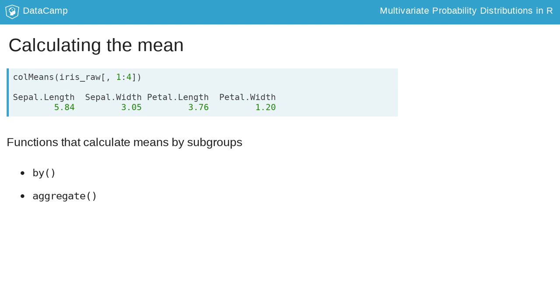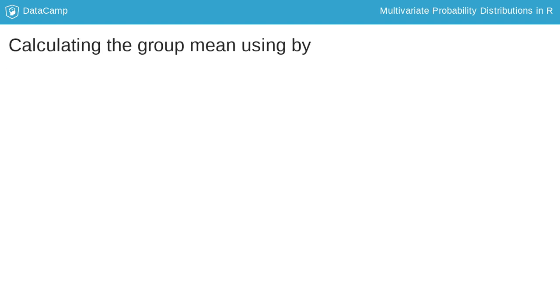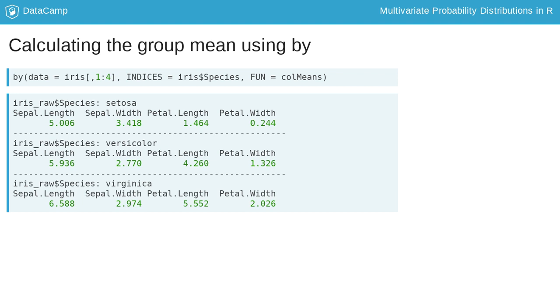There are two functions, by and aggregate, which subset the data and calculate the mean with the subset. The first argument of the by command is the variables whose mean we want to calculate. The second argument, indices, is the variable we want to group by. And the third argument is the function that we want to use to calculate the means, for example, colMeans. Here we calculate the means of the first four columns grouping by species.